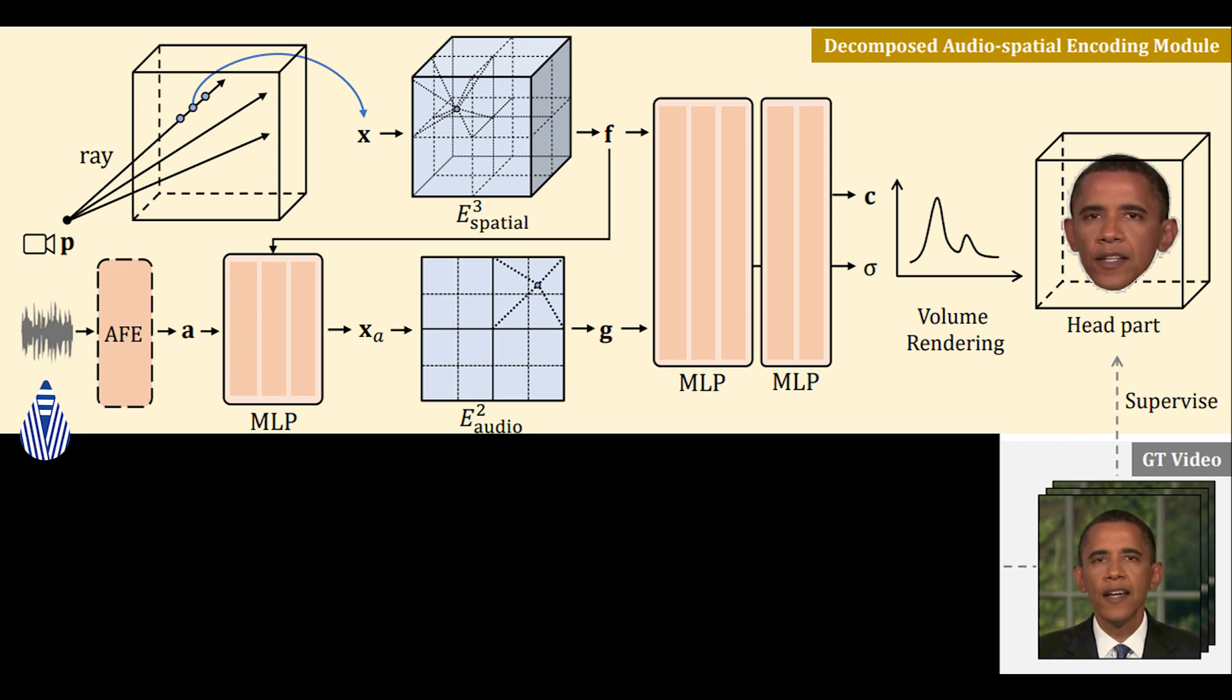Instead of predicting all pixels' densities and colors matching the audio for a specific frame, they will work with two separate new and condensed spaces called Grid Spaces, or Grid-based Nerfs. They will translate their coordinates into a smaller 3D grid space, translate their audio into a smaller 2D grid space, and then send them to render the head.